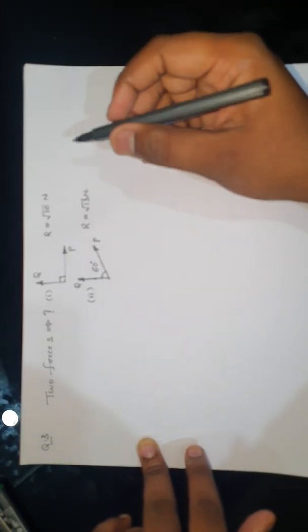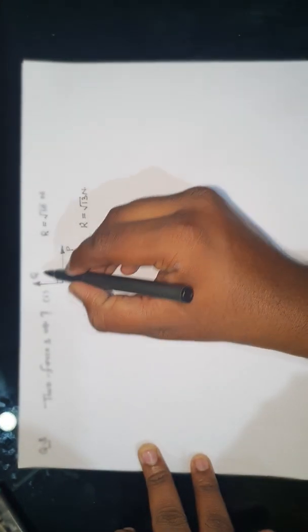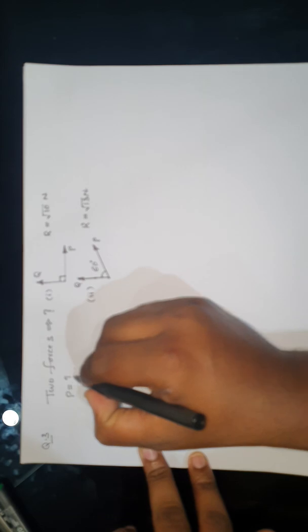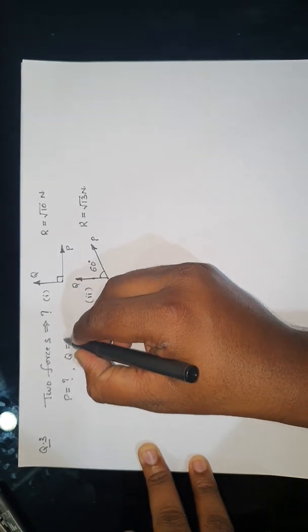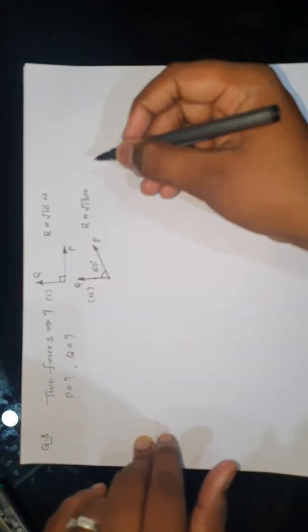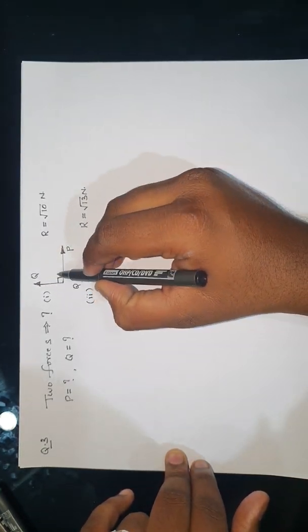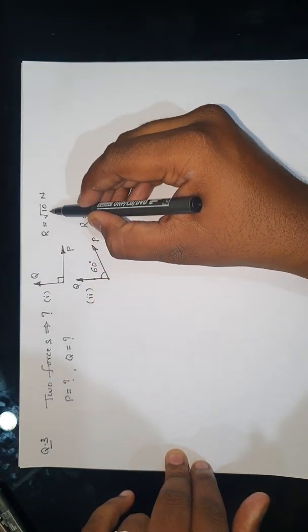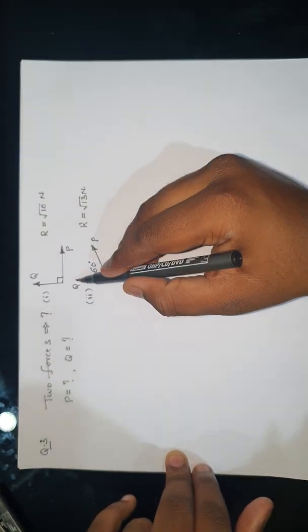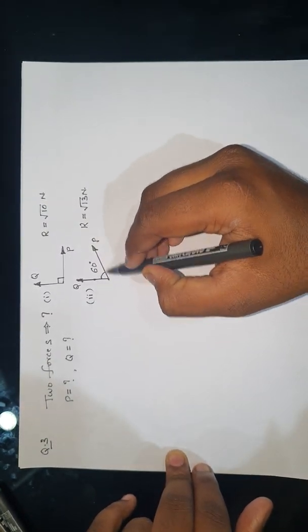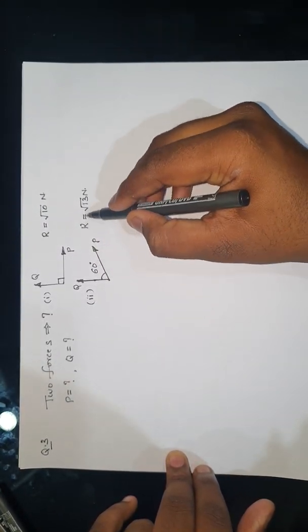Again repeating the question: at a point, there are two forces acting and the magnitude of these two forces needs to be calculated. Two conditions are given. First condition: if the two forces are perpendicular to each other, their resultant is √10 N. Second condition: if the two forces are separated by 60 degrees, their resultant is √30 N.